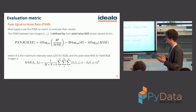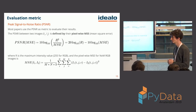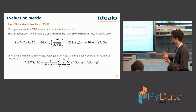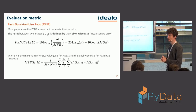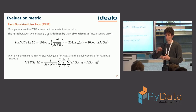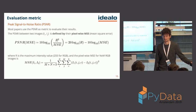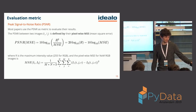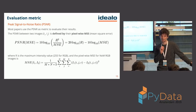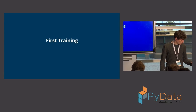The evaluation metric is Peak Signal-to-Noise Ratio, or PSNR — essentially a logarithmically scaled, negated mean squared error, so higher is better. The key thing to remember is that it's pixel-wise: we compare pixel by pixel.